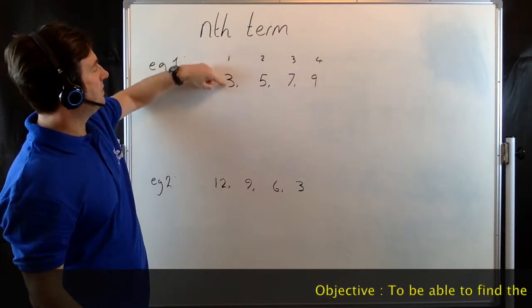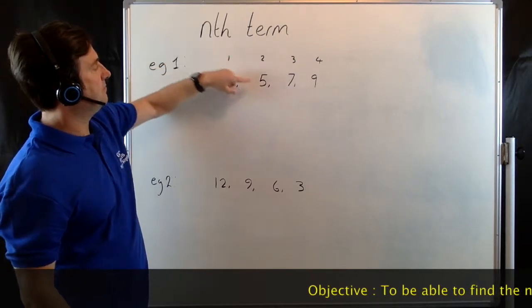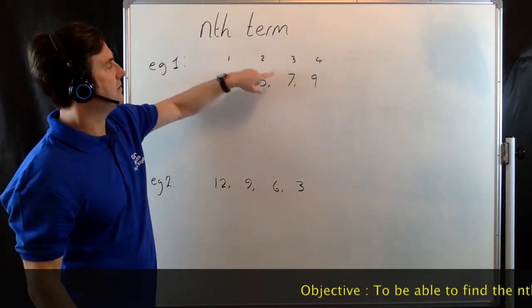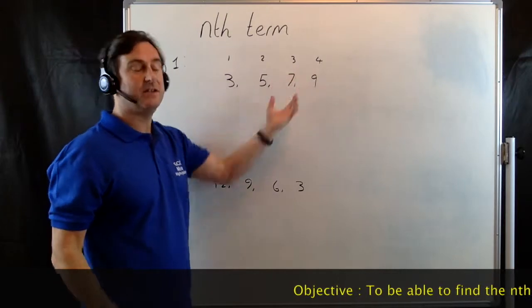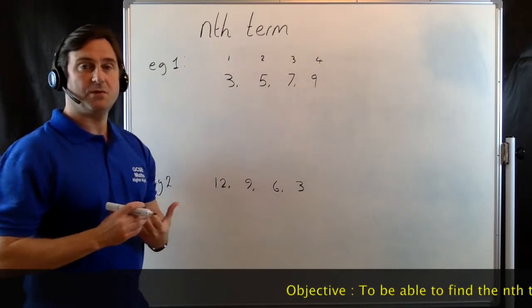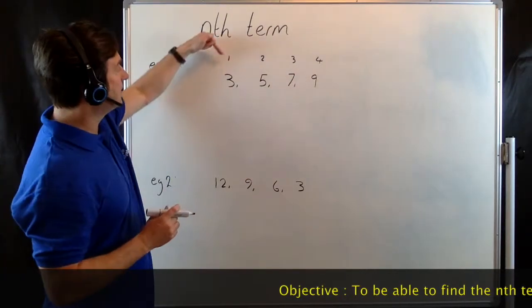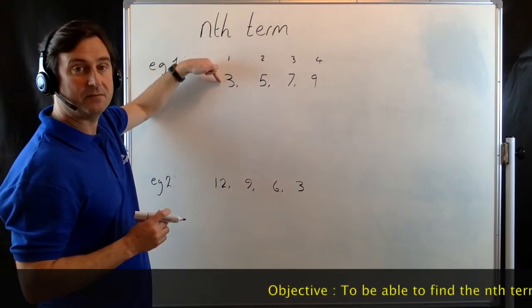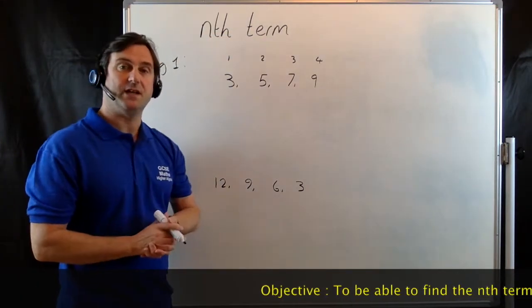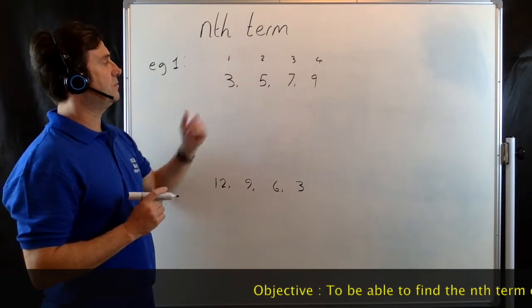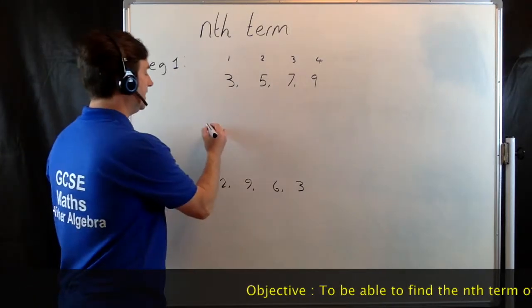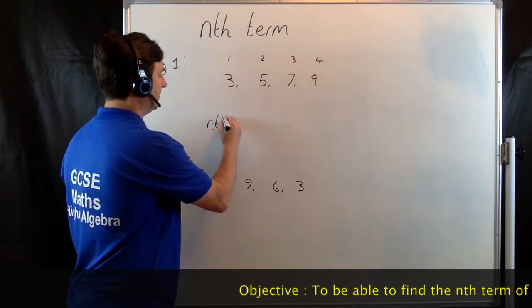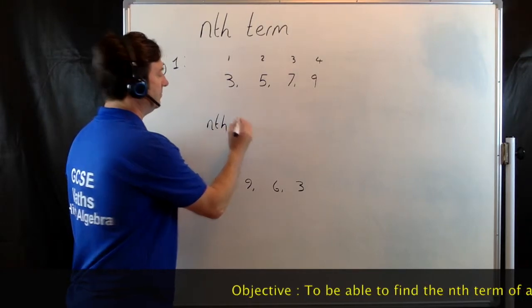So this term is the first term, this one is the second term, this one is the third term and so on. We've got to come up with a formula that links this number here to this number here. Now there's an easy way of doing that. All we need to do is write down nth term equals.